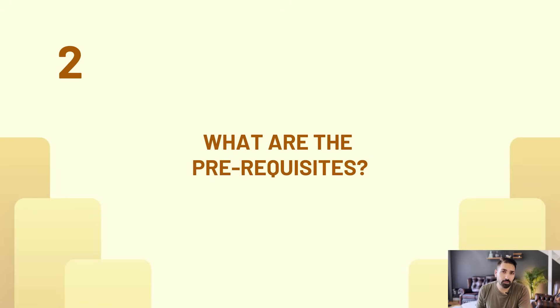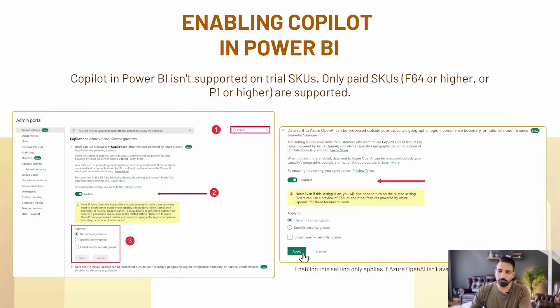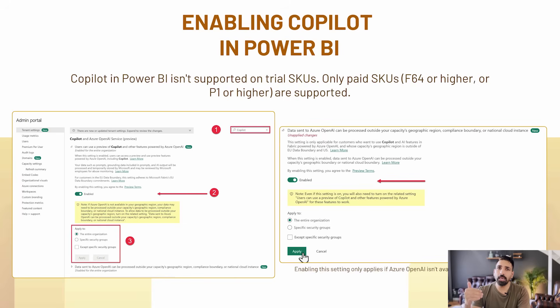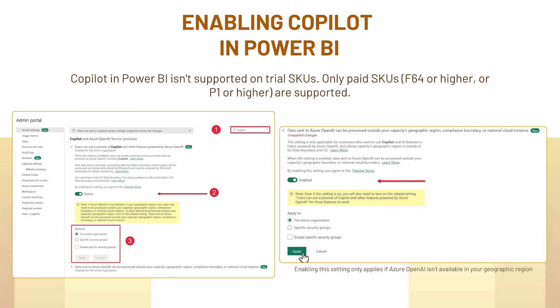Now let's talk about prerequisites. First, you need admin access to enable Copilot, and you must be on an F SKU — specifically a minimum of P1 or F64. Without that capacity, you cannot enable Copilot for Power BI. Second, you need to enable it within your organization via the admin portal. Search for 'Copilot' in the admin settings; the 'Copilot and Azure AI experiences' setting will appear. Enable that option and the one just below it as well — both must be enabled before you can start using it.